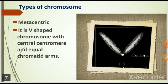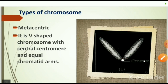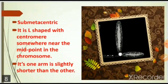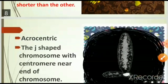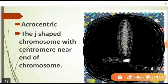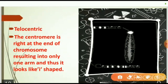The four types of chromosomes are: metacentric — V-shaped with a central centromere and equal chromatid arms; submetacentric — L-shaped with a centromere near the midpoint and one arm slightly shorter than the other; acrocentric — J-shaped with the centromere near the end of the chromosome; and telocentric — the centromere is right at the end, resulting in only one arm, giving it an I-shape.